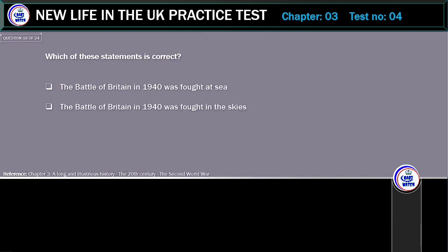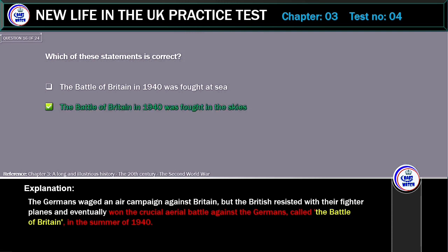Which of these statements is correct? The Battle of Britain in 1940 was fought at sea, or the Battle of Britain in 1940 was fought in the skies? The correct answer is: the Battle of Britain in 1940 was fought in the skies. The Germans waged an air campaign against Britain, but the British resisted with their fighter planes and eventually won the crucial aerial battle called the Battle of Britain in the summer of 1940.